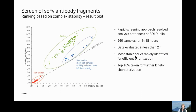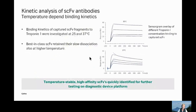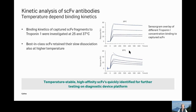The most stable single-chain fragments were rapidly identified and used for further prioritization — the top 10% were taken for additional kinetic characterization. They aimed to get best-in-class binders showing stable complex formation at physiological temperatures. For this purpose, they investigated kinetic rate constants at 25°C and also at 37°C. One of the best-in-class single-chain fragments retained quite stable complex formation — a slow dissociation also at physiological 37°C. A temperature-stable, high-affinity single-chain fragment was quickly identified for further testing in BDI's diagnostic device platform.